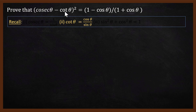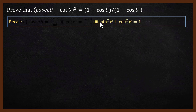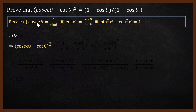We can replace cot theta with cos theta by sin theta. Third, we will use the identity sin squared theta plus cos squared theta equals 1. These are the basic definitions and identities. Please make sure you memorize these identities and definitions.